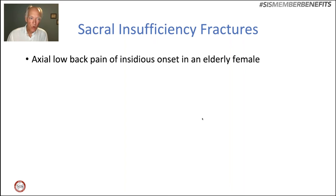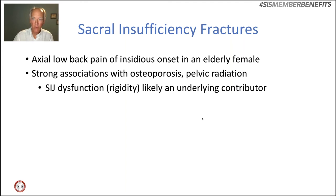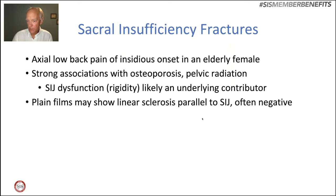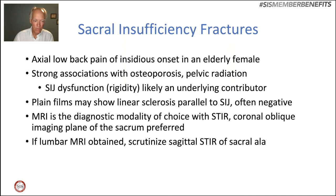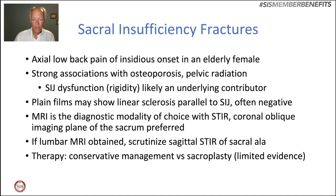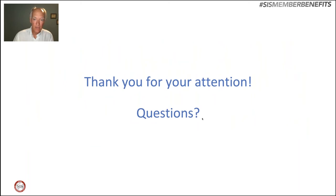To summarize: sacral insufficiency fractures need to be in our thought process when we see a patient with axial low back pain of insidious onset, particularly in an elderly female. There are strong associations with osteoporosis and pelvic radiation. Sacroiliac joint dysfunction with rigidity is likely an underlying contributor. Plain films can show linear sclerosis parallel to the SI joint but most often will be negative. MRI is the diagnostic modality of choice — STIR images in the coronal oblique plane of the sacrum are preferred. If we only have a lumbar spine MRI, look carefully at the far lateral sagittal views for signal abnormality in the sacral ala. Therapy: conservative management provides benefit; sacroplasty seems to have positive benefit but with limited evidence.